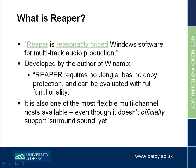The bit of software we use to implement this — well, there are two bits of software. There's the DAW we're using, which is called Reaper. Reaper is a reasonably priced Windows and Mac — when I wrote this slide a few years ago it was only available on Windows, but you can use it on Mac now as well. It's software for multi-track audio production developed by the author of Winamp. It requires no dongle, has no copy protection, and can be evaluated with full functionality. It's very good value for money — a licence is about $60, which compares very favourably to Logic or Cubase.